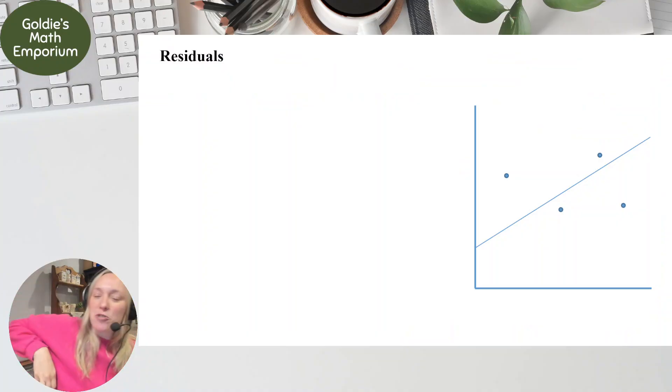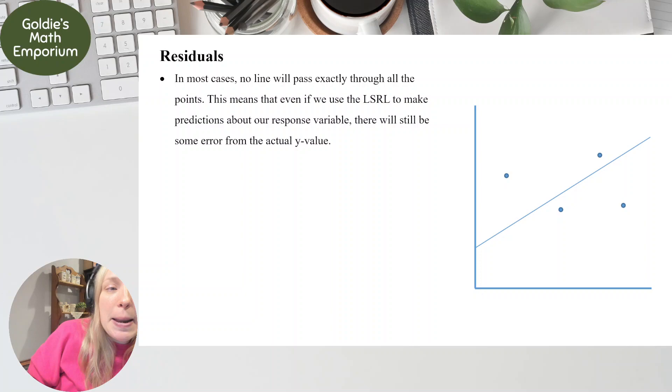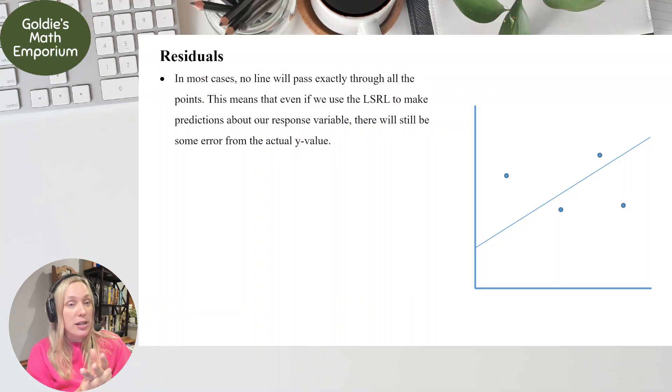Residuals. Let's talk about residuals. So in most cases, no line is going to pass exactly through all of the points on a scatter plot, right? We make a least squares regression line, and it's not going to pass through every point. We expect that. We are using our least squares regression line to summarize the relationship between our x and our y, and we also use it to make predictions.